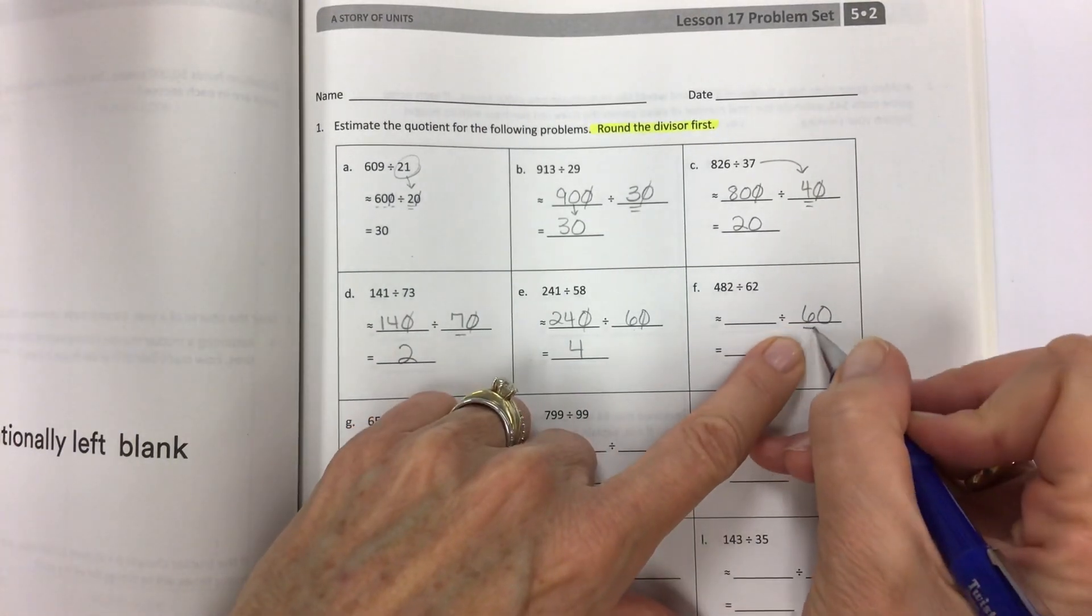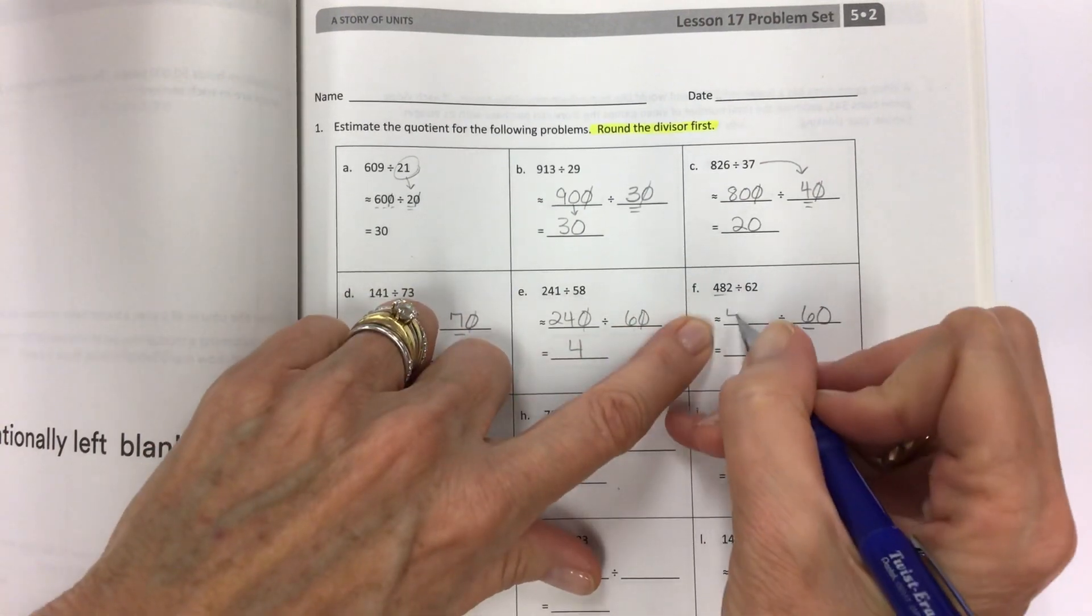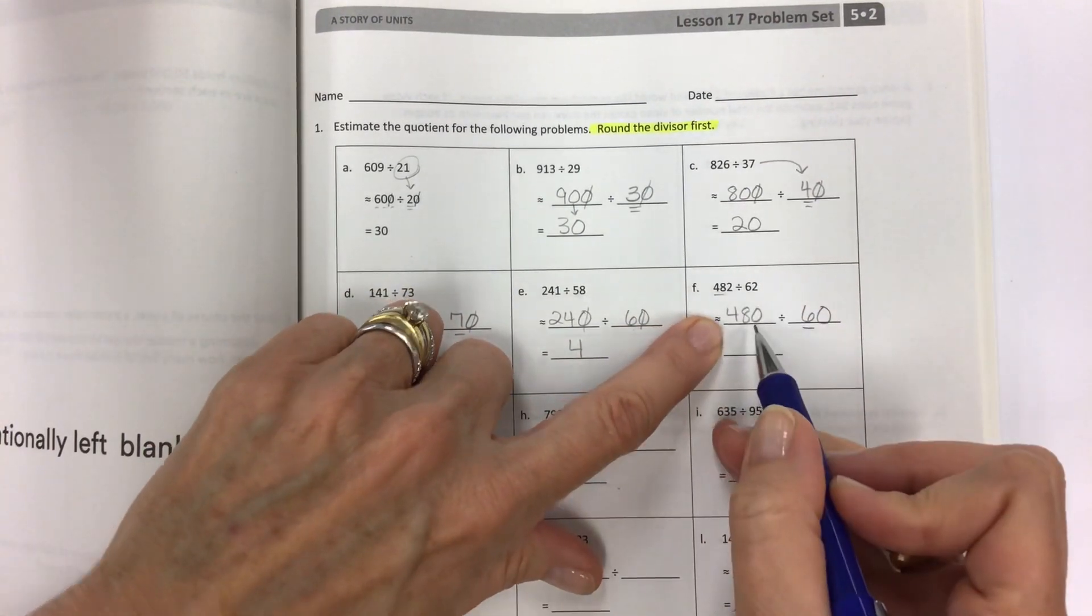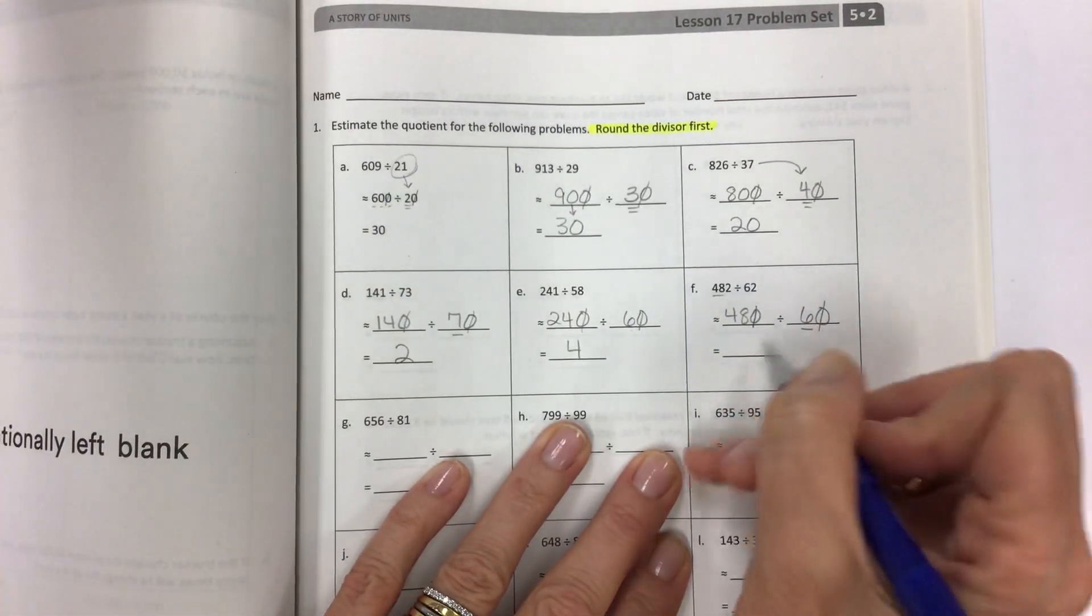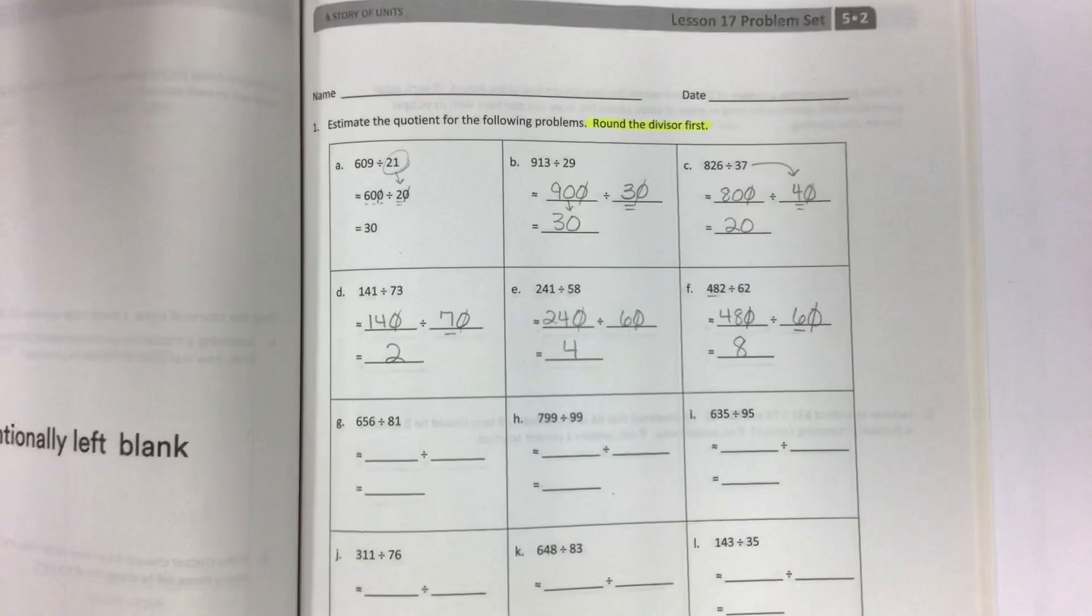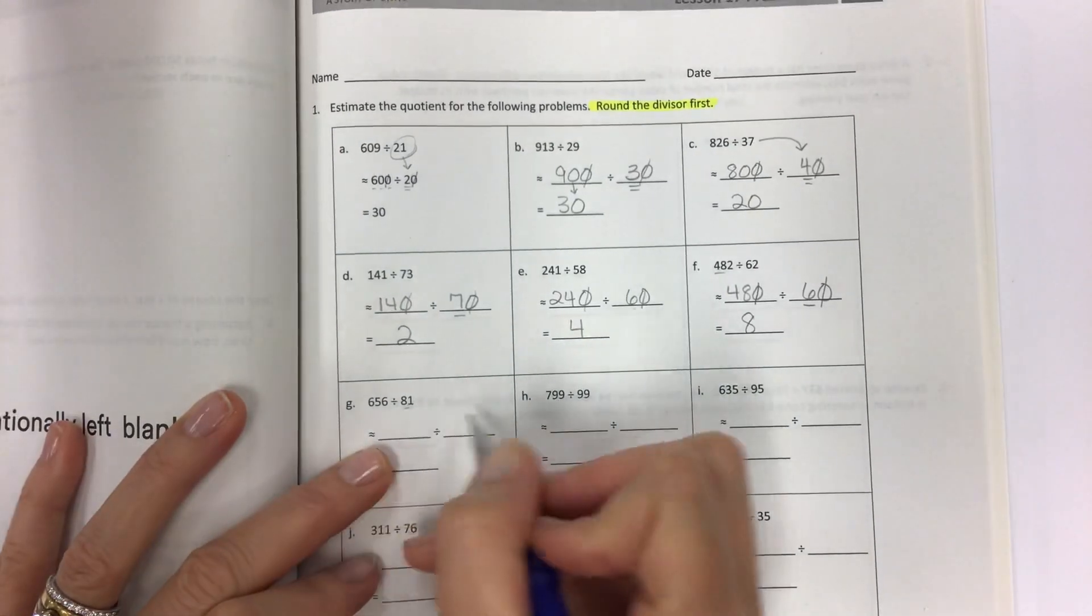Round the divisor first. 60. Need a multiple of 6 that's close to 48. Well, how about 48? Change to 480. 482 to 480. Divide by 10 for both of them. 48 divided by 6 is 8. 6 times 8 is 48. Remember, it rhymes.